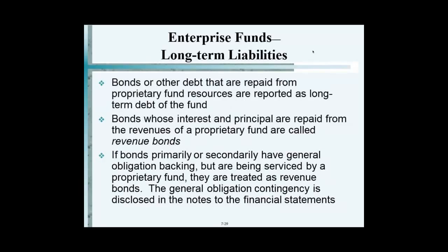Revenue bonds are bonds issued by a utility or enterprise fund which are secured by its revenues. Sometimes an enterprise fund is incapable of borrowing because it has shaky credit and people are unwilling to lend to it. So the general government comes in and issues its own bonds, called general obligation bonds. If issued by the government's general fund they're called GO bonds; if issued by enterprise funds, they're called revenue bonds — two different types.